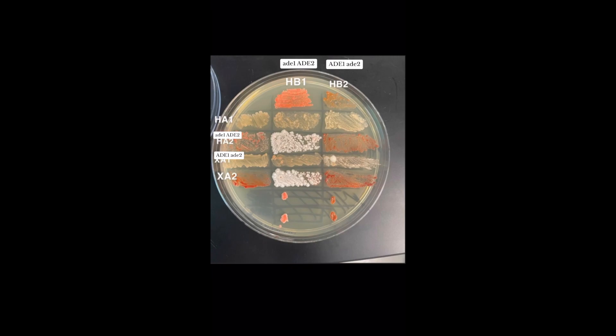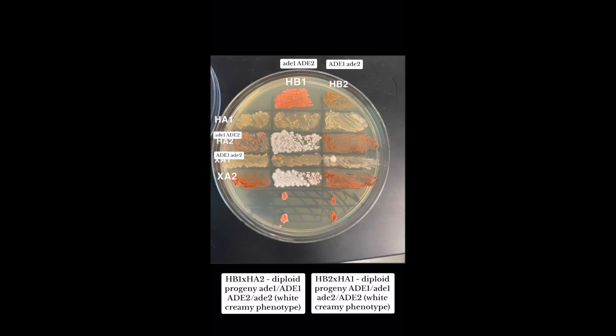Later, we'll touch upon the tester strains Xa1 and Xa2. The cross between Hb1 and Ha1 produced red progeny, whereas the cross between Hb1 and Ha2 produced white progeny. For Hb2, the cross with Ha1 produced white progeny, whereas the cross with Ha2 produced red progeny. These colors match our expectations.